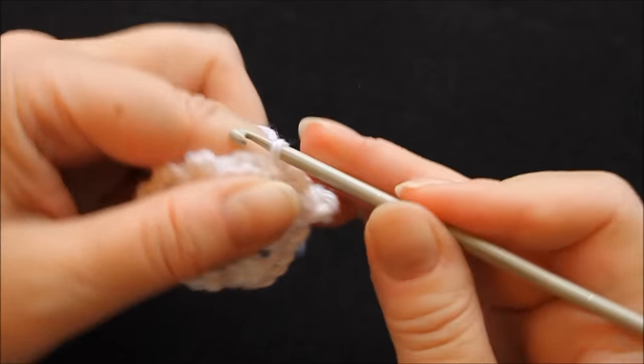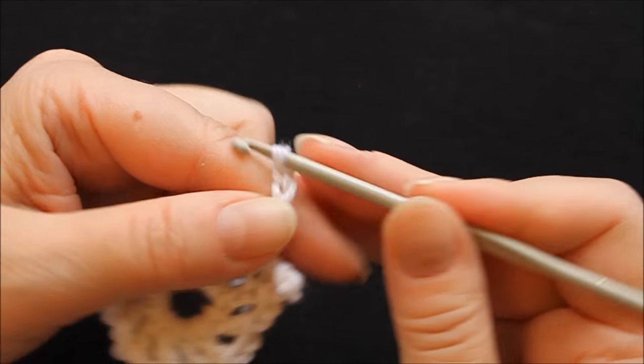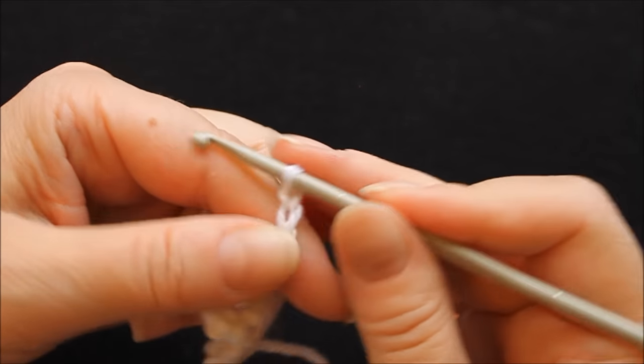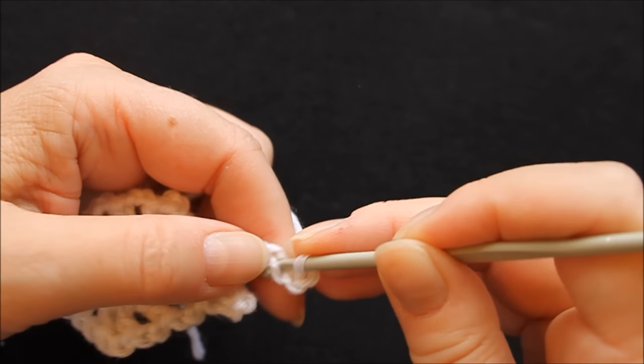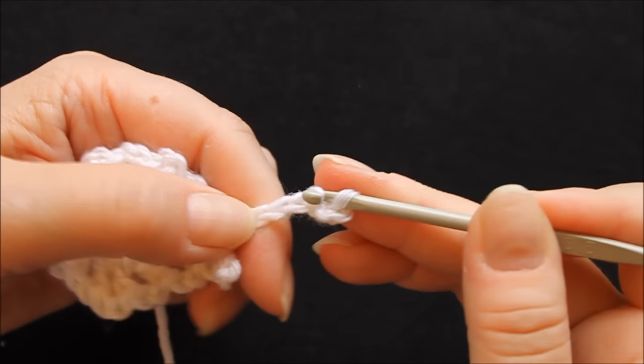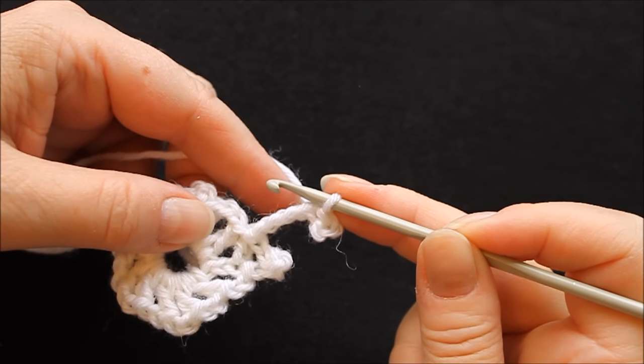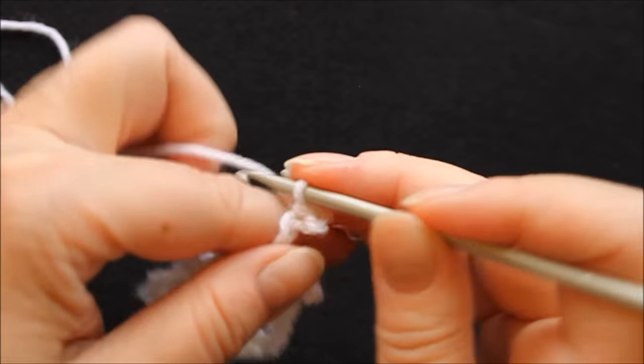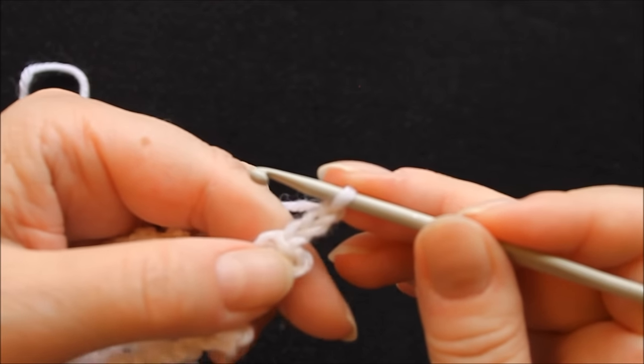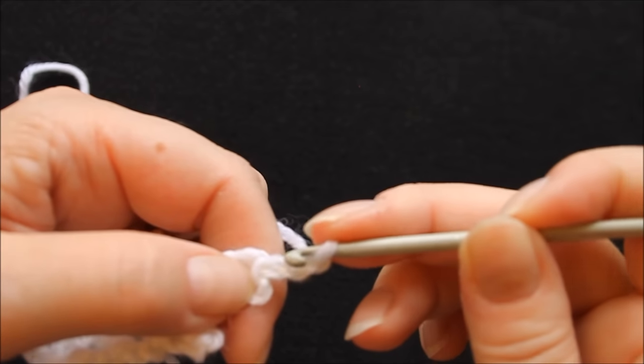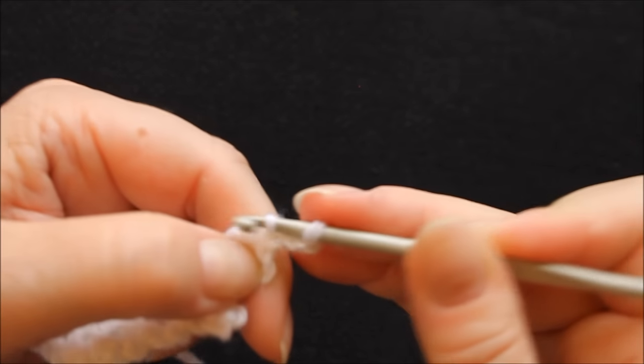Chain seven, and now count backwards again to the third and slip stitch. This is the first picot of a set of three and then I'll chain again three and put the hook through the first one of these, this chain there and slip stitch.